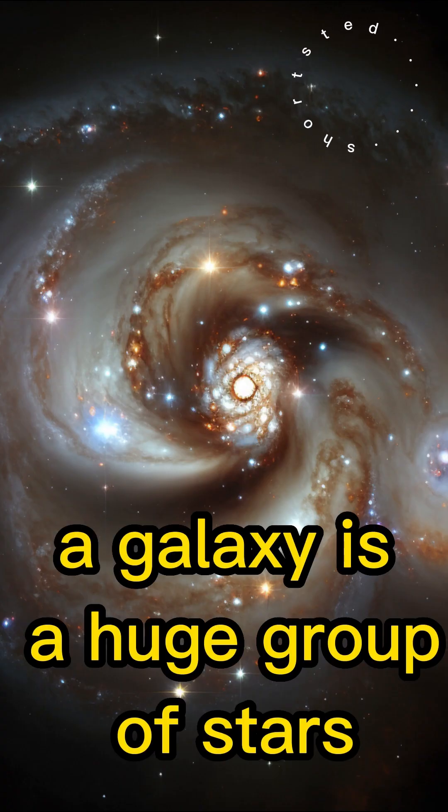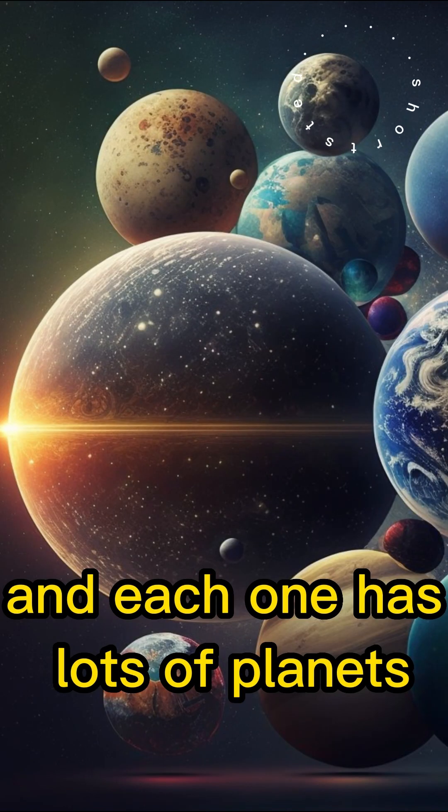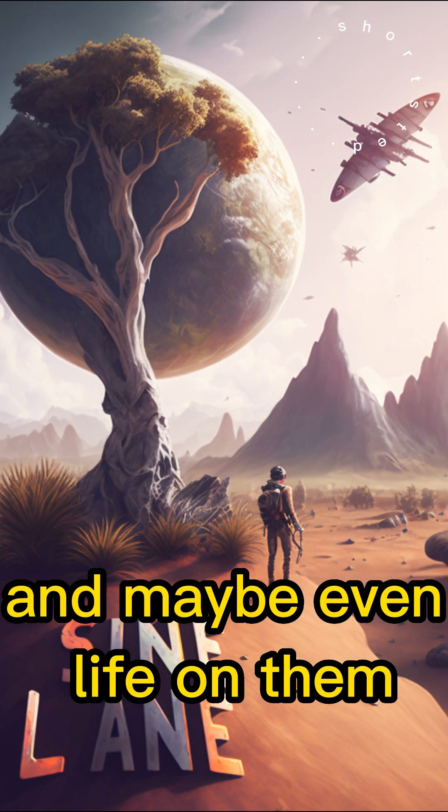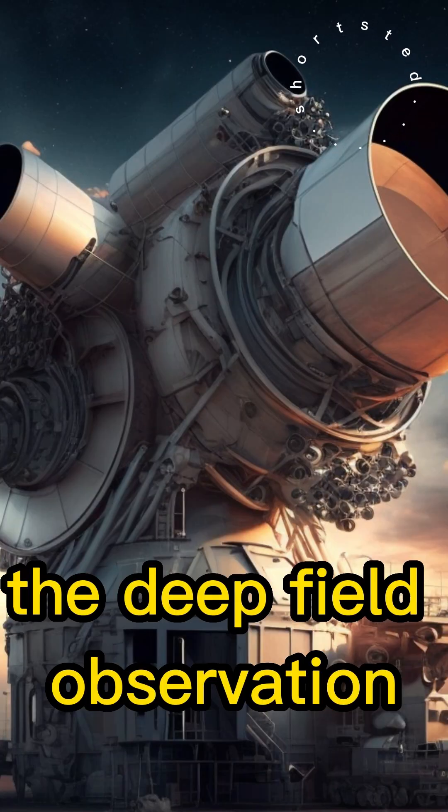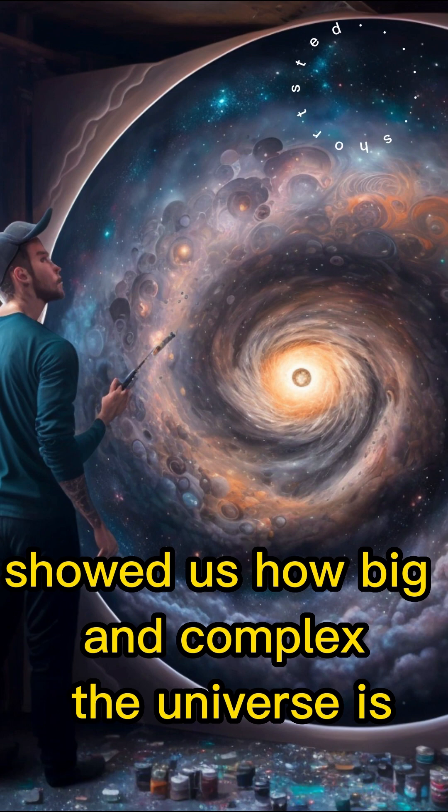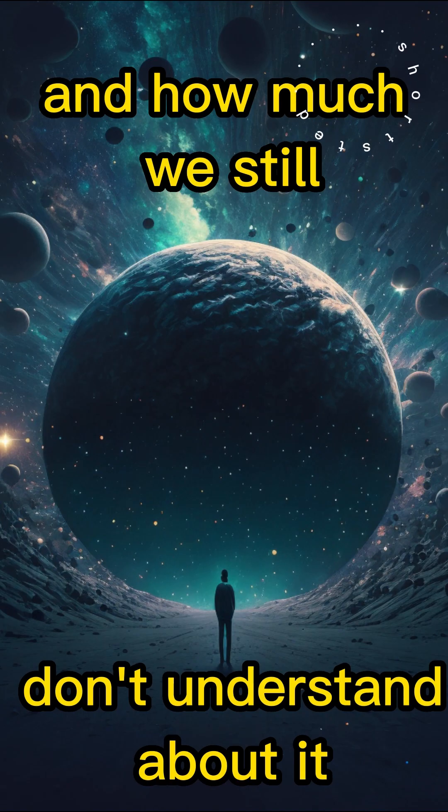A galaxy is a huge group of stars, and each one has lots of planets and maybe even life on them. The Deep Field Observation showed us how big and complex the universe is, and how much we still don't understand about it.